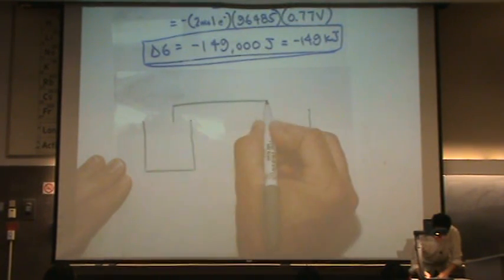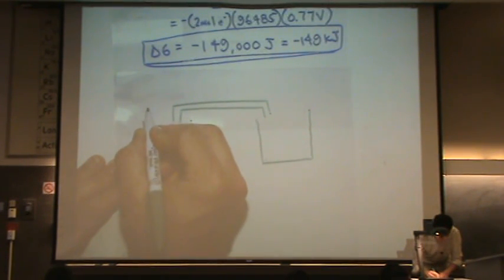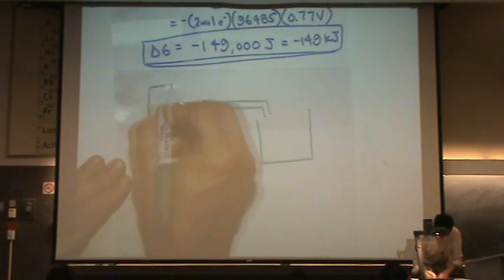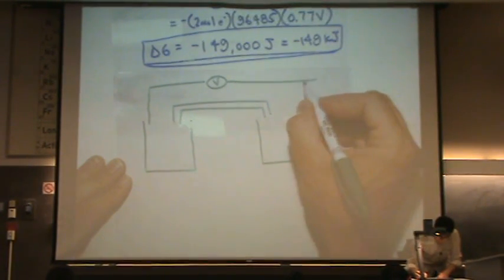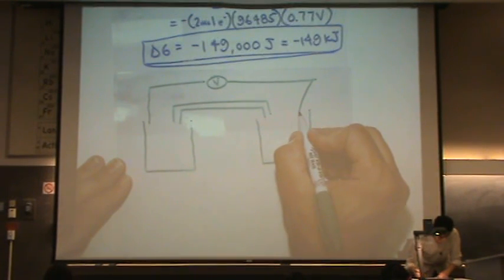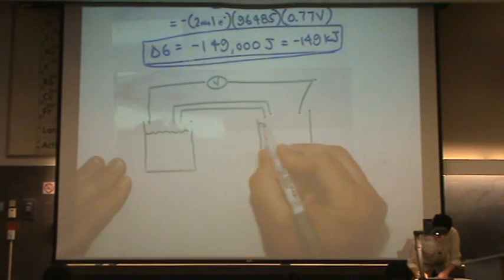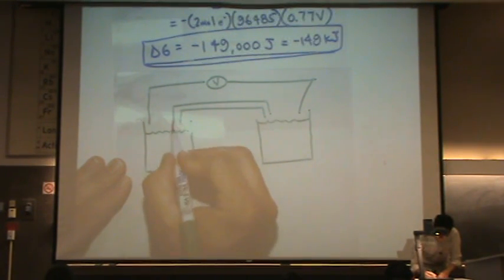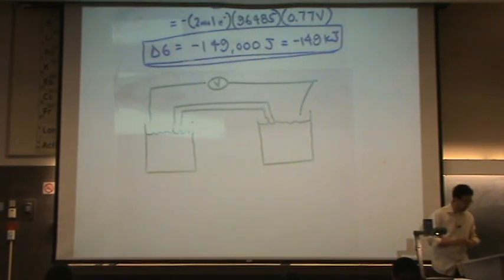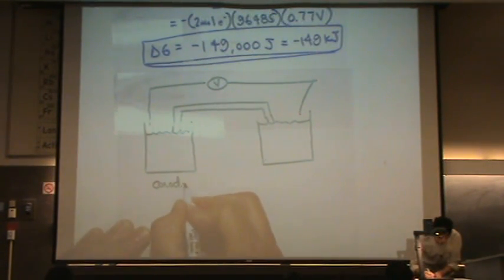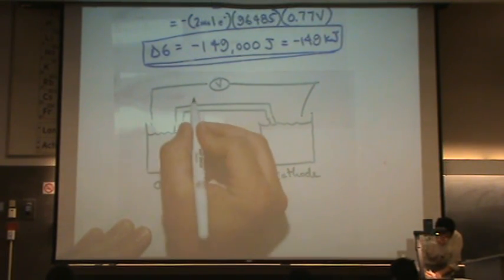So let me just draw the template first. We'll draw our half cells. We'll draw our salt bridge. We'll draw our wire. Here we measure the voltage. Like that. We've got our liquid. Let me do the left hand side first. And that's the anode. We've got the cathode. We've got the salt bridge.